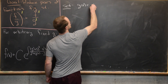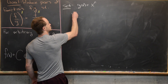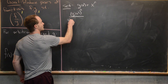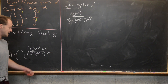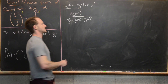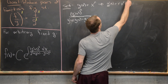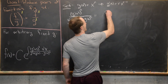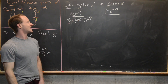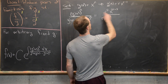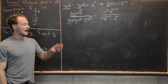We need g prime of x squared over (g prime of x times g of x minus g of x squared). Given g of x equals x to the r, g prime of x equals r times x to the r minus one. Squaring that gives r squared times x to the 2r minus 2. Then g prime times g gives r times x to the 2r minus 1, and g squared is x to the 2r.